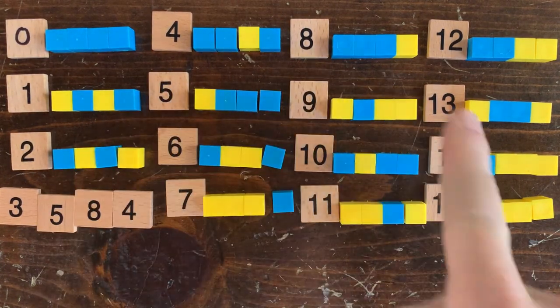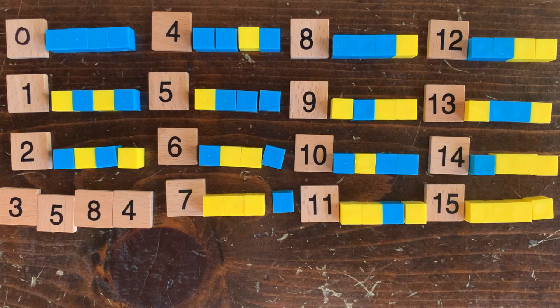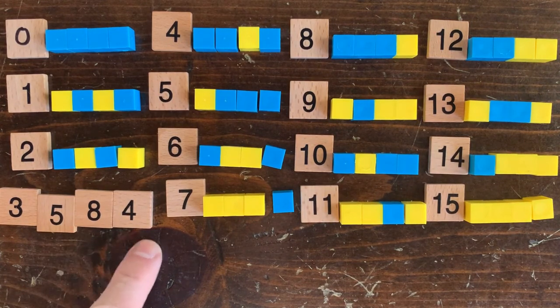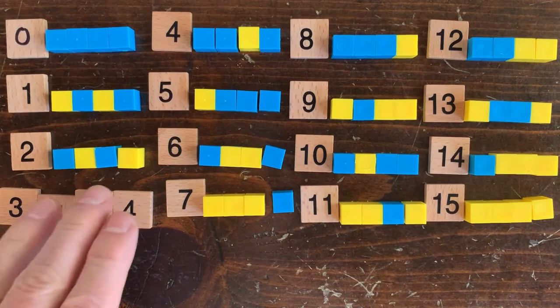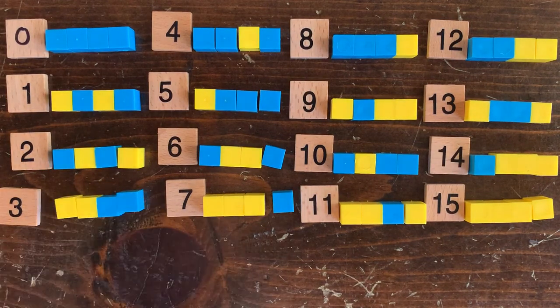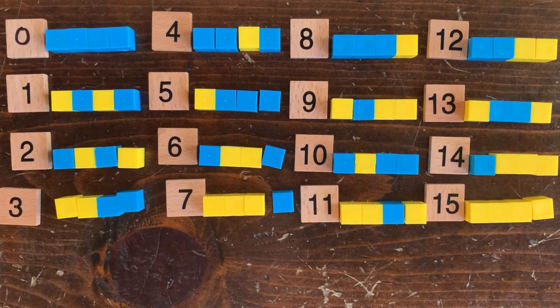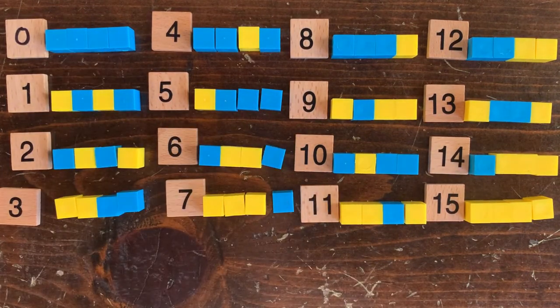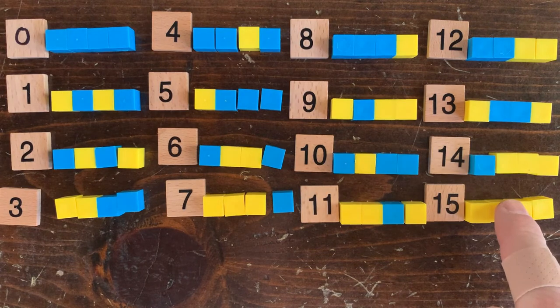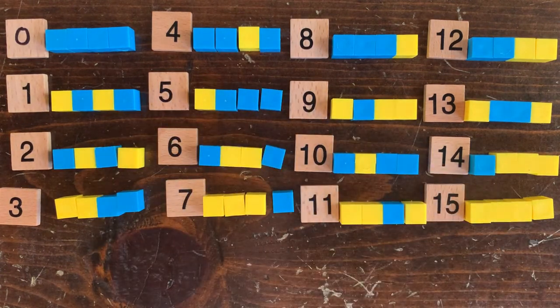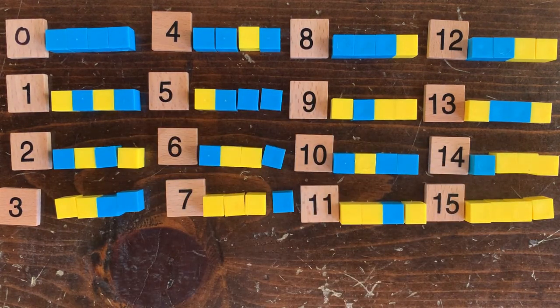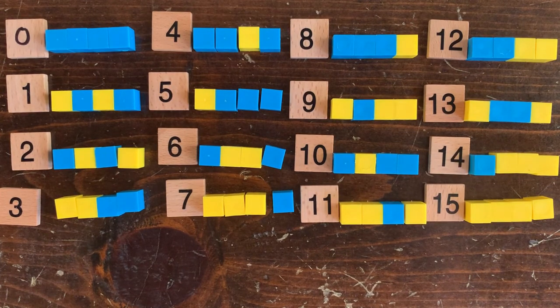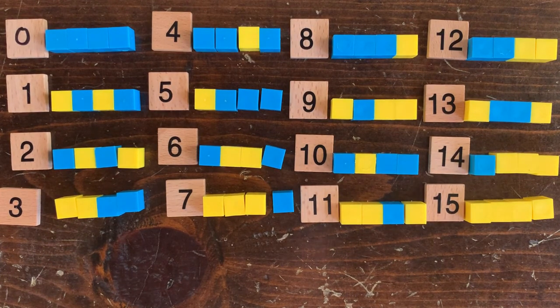We took every number from 0 to 15 and recorded its odd even sequence. For example, starting with 3, we get 3, 5, 8, 4, which is odd, odd, even, even, shown here in yellow and blue. We found an amazing pattern, which is that every number has a distinct initial odd even sequence. Every conceivable odd even sequence is represented here. In other words, there's a one-to-one correspondence between start numbers and odd even sequences.